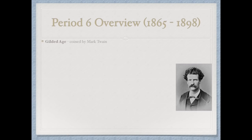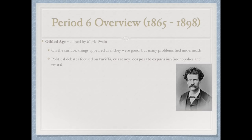The Gilded Age is a term coined by Mark Twain. On the surface, US society appeared to be doing well, but there were many problems underneath. Political debates focused on tariffs — Republicans wanted to raise them, Democrats wanted to lower them. On currency, Republicans favored the gold standard while populists favored the free and unlimited coinage of silver. We also have corporate expansion, which turned into monopolies and trusts, as businesses became very powerful during this time.